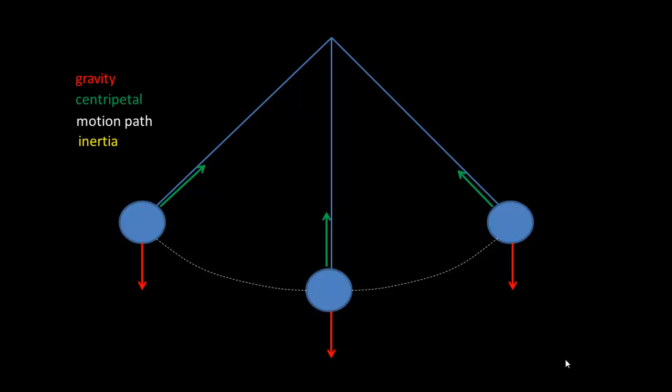Inertia is the tendency of an object to resist a change in motion. So in this case, the pendulum weight is in motion. It wants to remain in motion. And it's specifically going in a straight line until an unbalanced force causes it to change direction, slow down, or speed up.